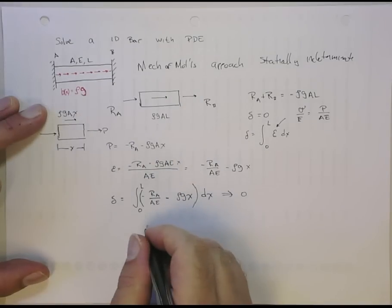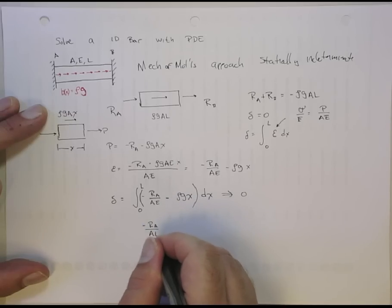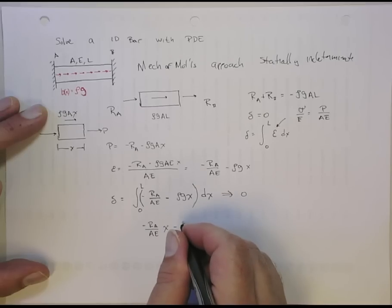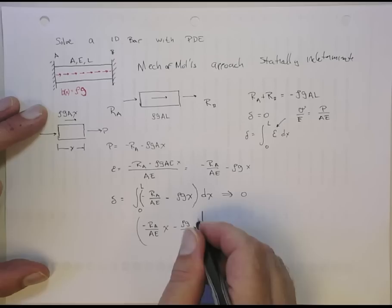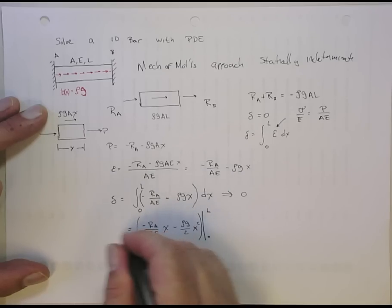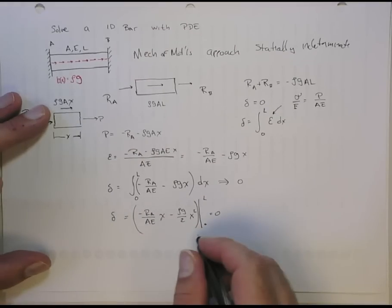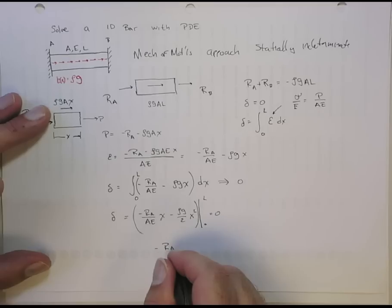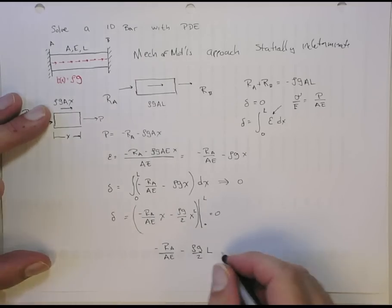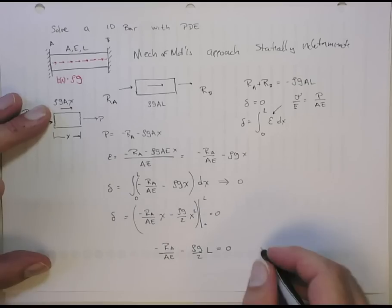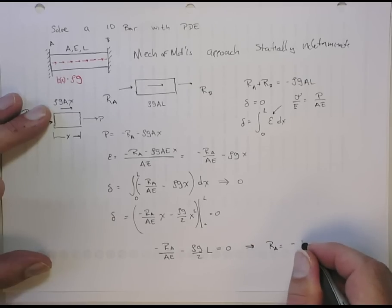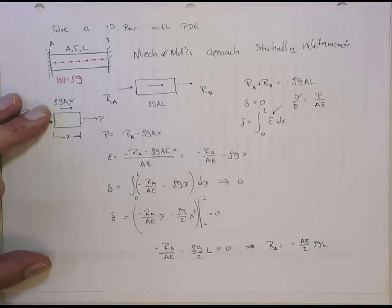And this will give me minus RA on AE x minus rho g on two x squared evaluated at zero and L. That is delta, and that has to go to zero. So that's the displacement condition. And this will give me minus RA on AE minus rho g on two times L. It has to equal zero. And from that, I can get RA. This gives me that RA is equal to minus AE on two rho g L.